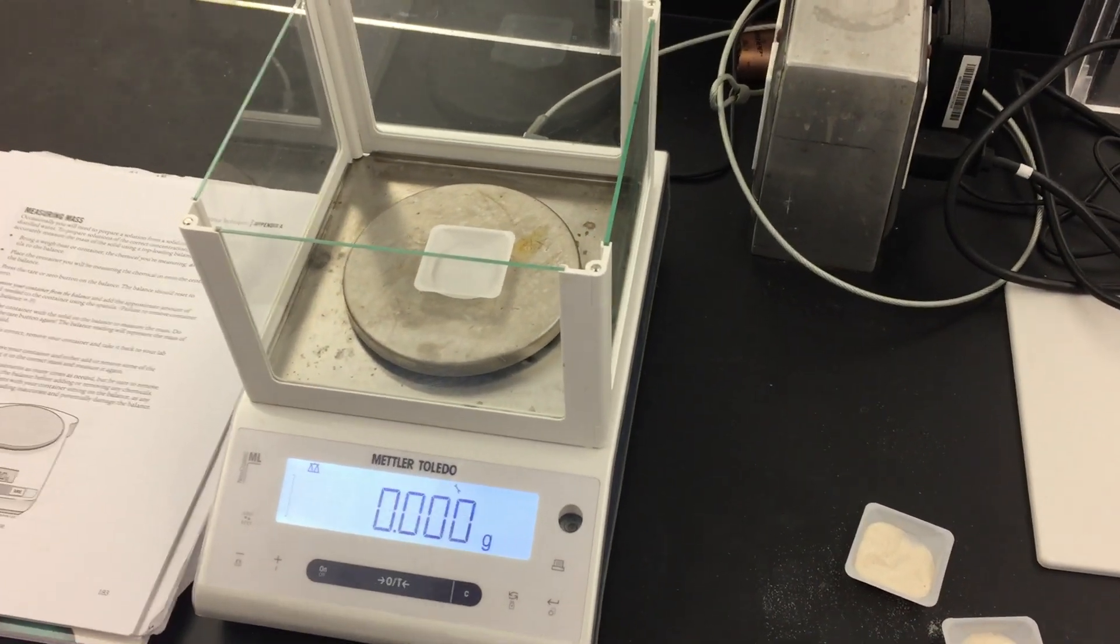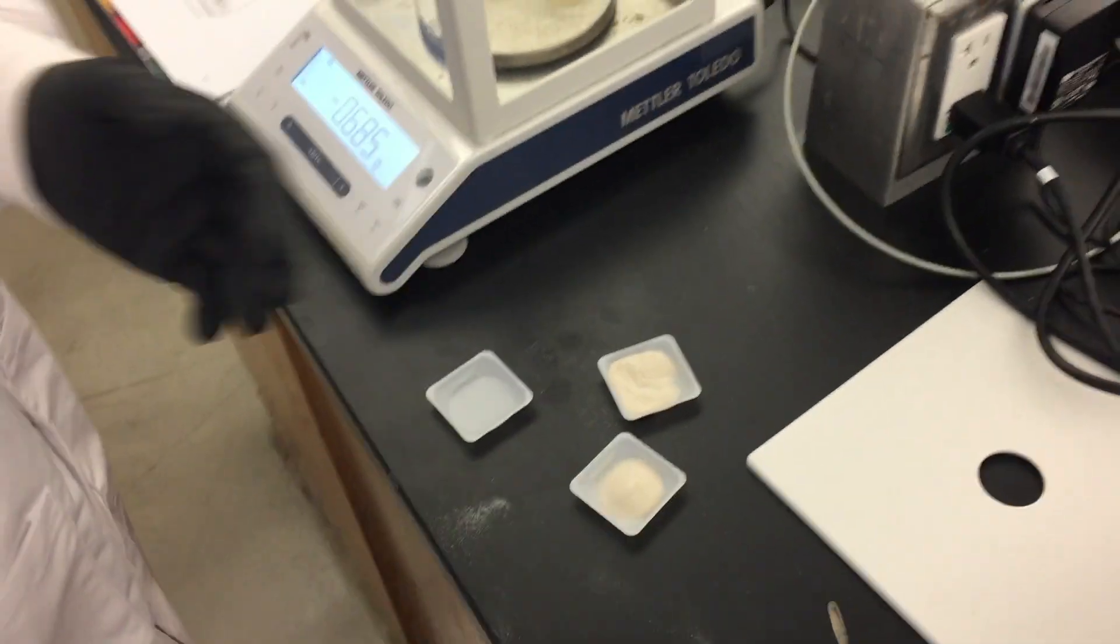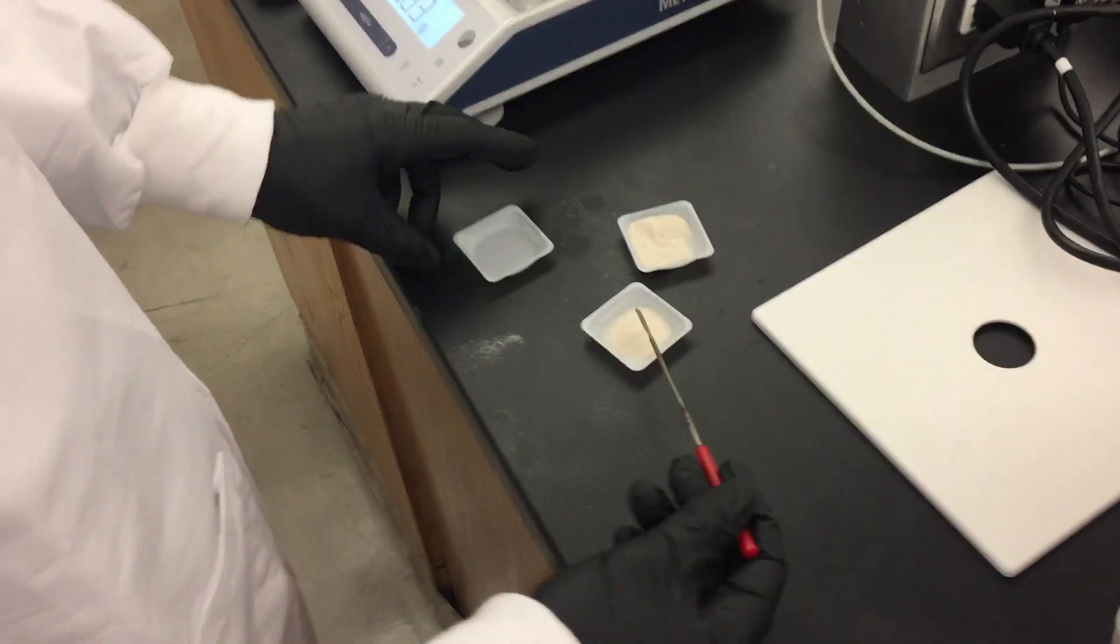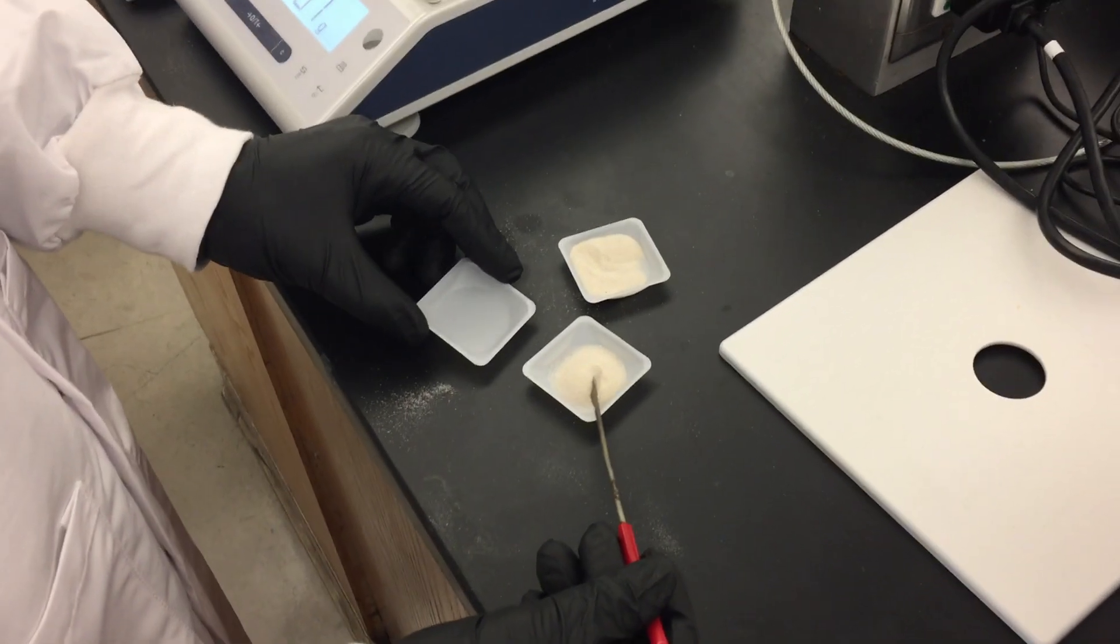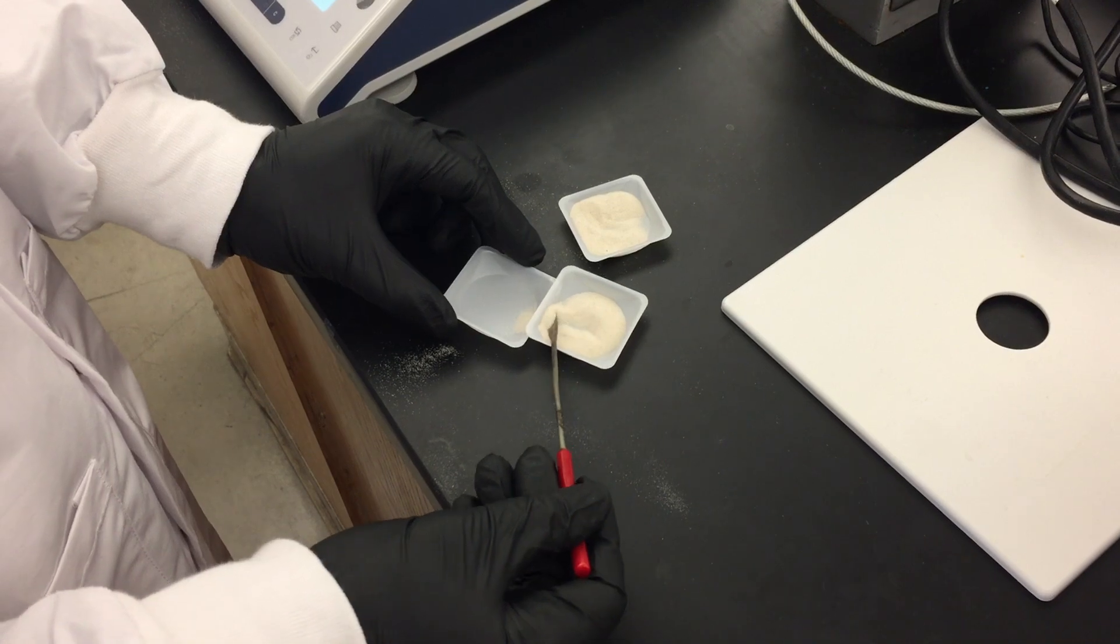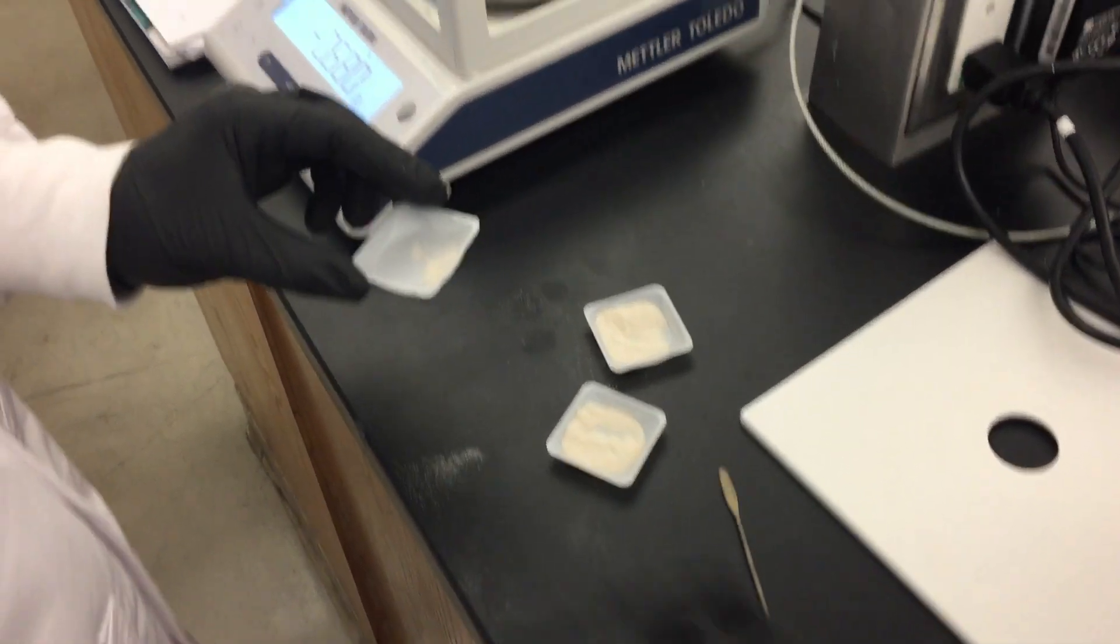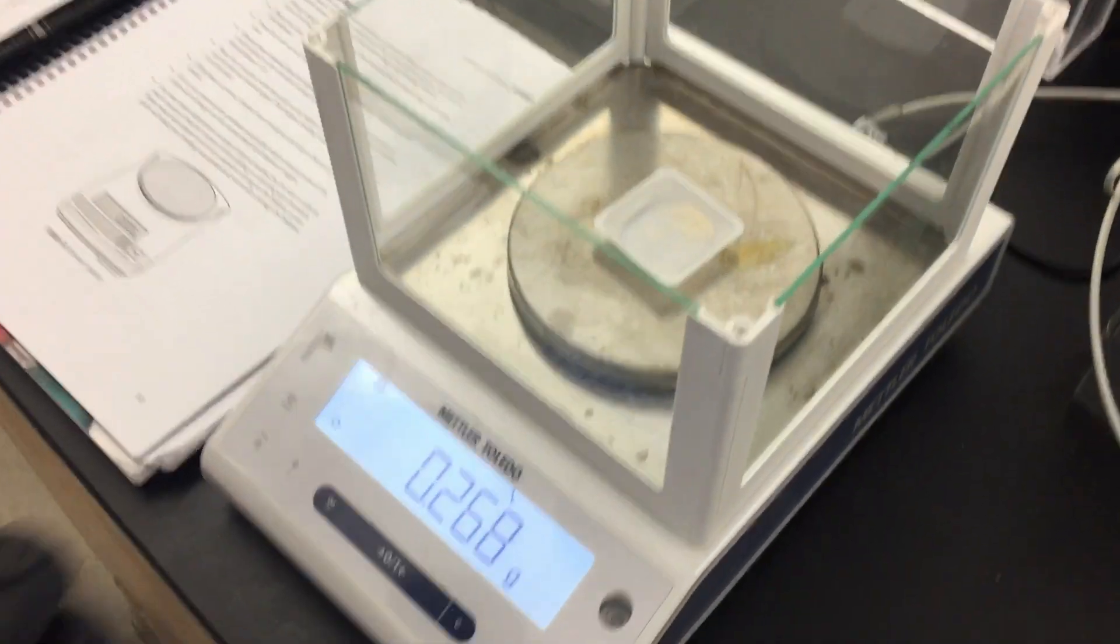Then we will remove the weigh boat and take the solid that we will be measuring. Using a spatula, we will put an estimate and then place it again on the center, not zeroing it out in between.